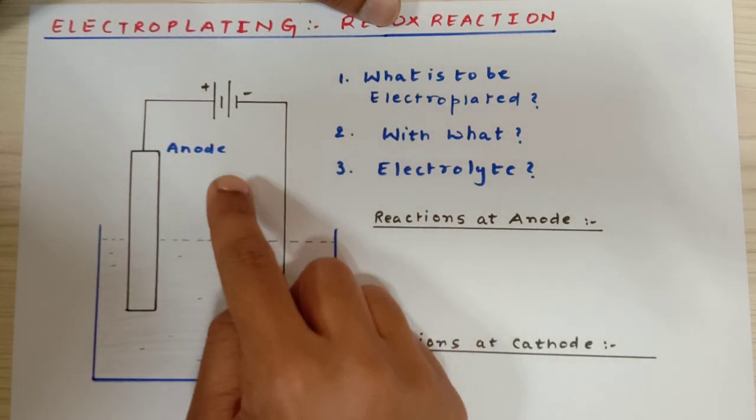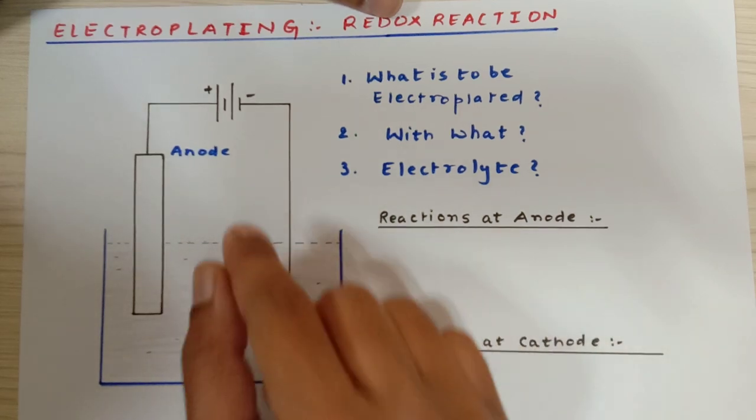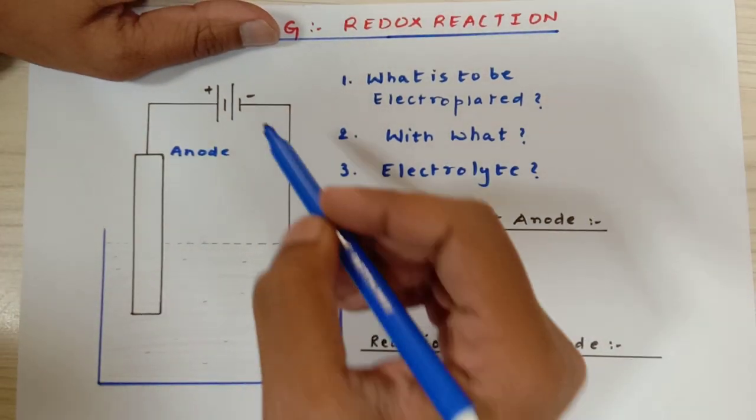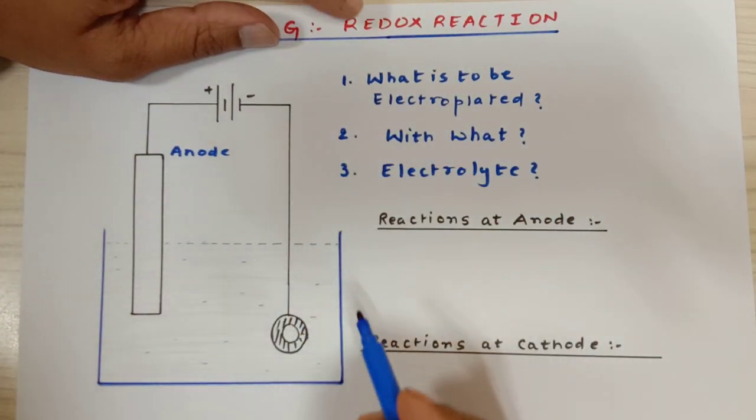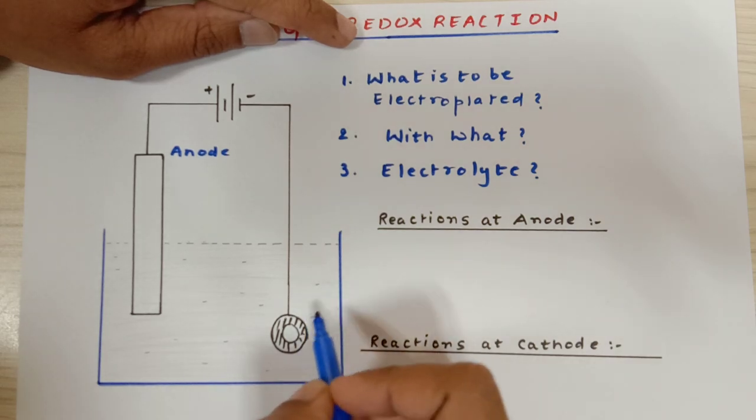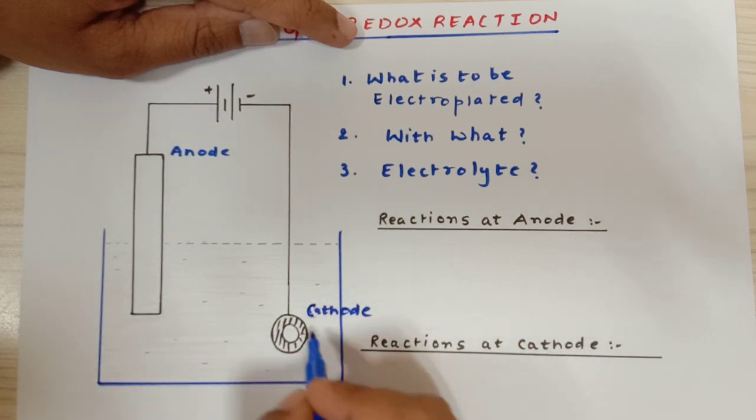Just remember that the anode is the one where oxidation takes place, and this is connected with the negative terminal. I am going to call this as cathode.